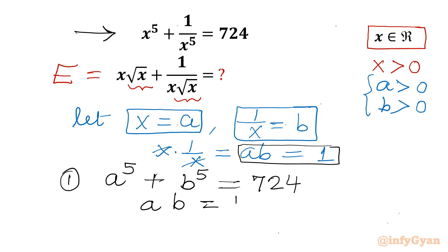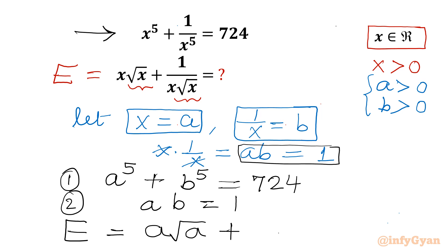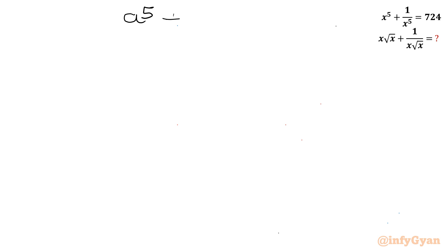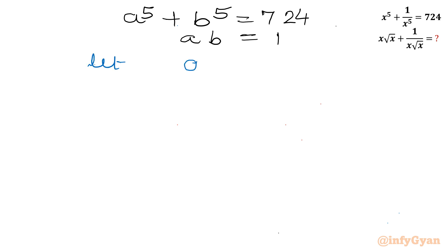This is a system of two equations. We have to evaluate the expression x√x + 1/(x√x), which becomes a√a + b√b in terms of a and b. Let us solve the system. I will use the substitution u = a + b, then compute u², u³.